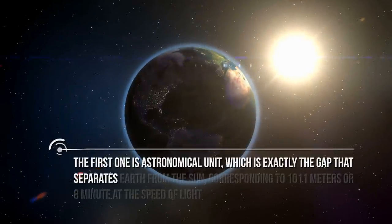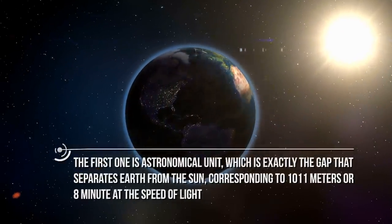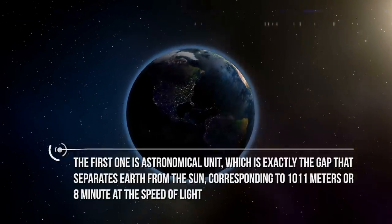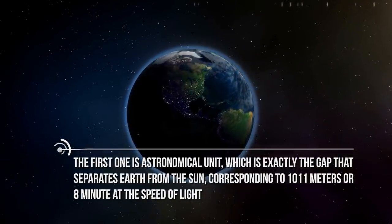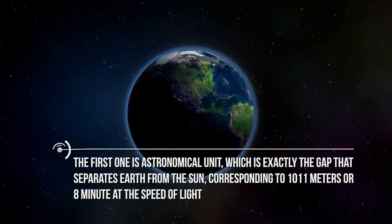The first one is astronomical unit, which is exactly the gap that separates Earth from the Sun, corresponding to 10 to the 11th meters or 8 minutes at the speed of light.